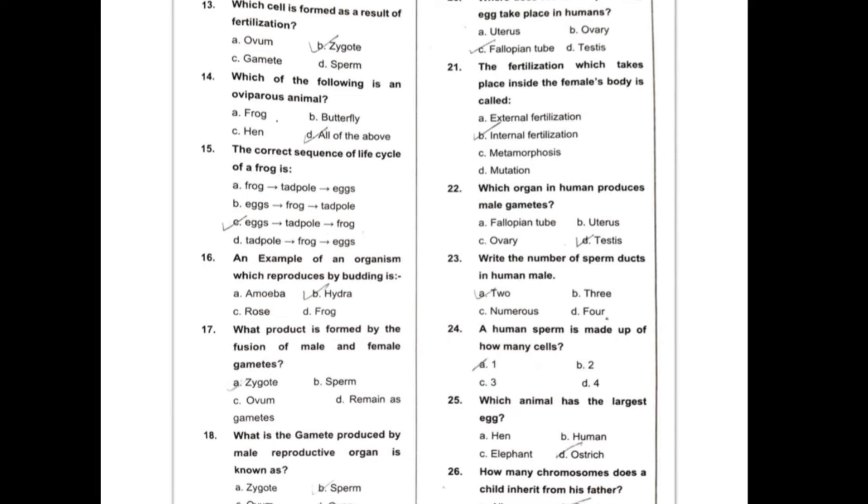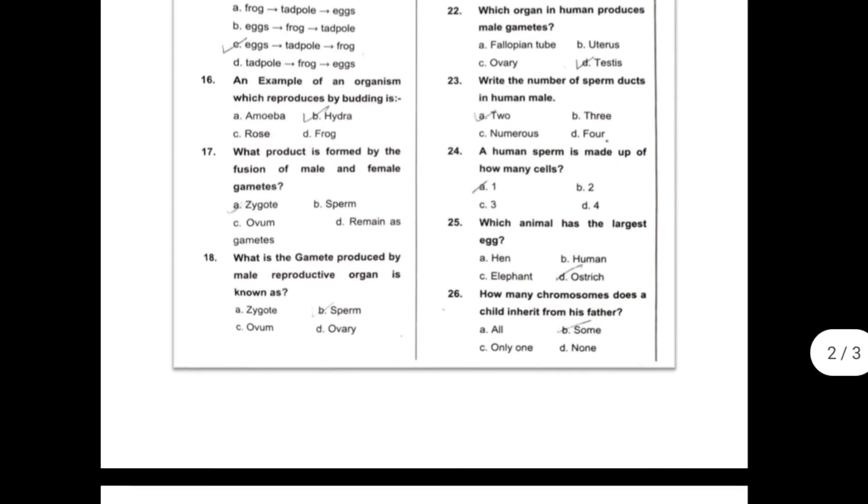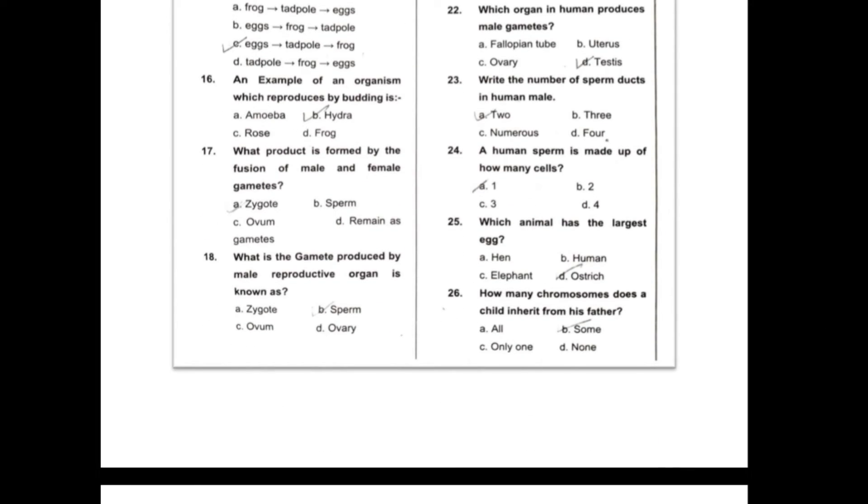Fifteenth, the correct sequence of life cycle of a frog is? So this can be eggs, tadpole, and frog. Sixteenth, an example of an organism which reproduces by budding is? So this can be hydra.